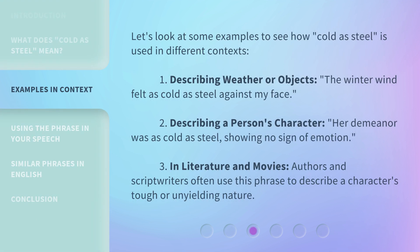Let's look at some examples to see how 'cold as steel' is used in different contexts. Describing weather or objects: 'The winter wind felt as cold as steel against my face.' Describing a person's character: 'Her demeanor was as cold as steel, showing no sign of emotion.' In literature and movies, authors and scriptwriters often use this phrase to describe a character's tough or unyielding nature.